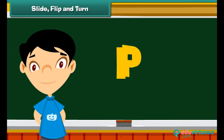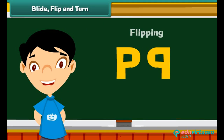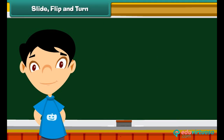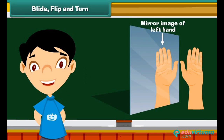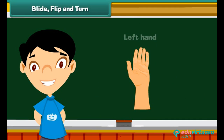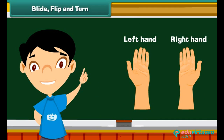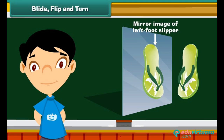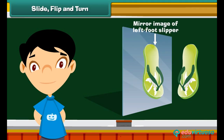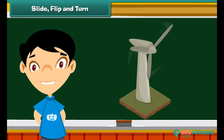Creating a mirror image of an object is flipping. In real life, we come across many instances of flipping. For example, a right hand is a mirror image of our left hand, so if we flip our left hand, we get our right hand. Similarly, the right foot slipper is a mirror image of the left foot slipper. Flipping or sliding does not alter the shape of the object.